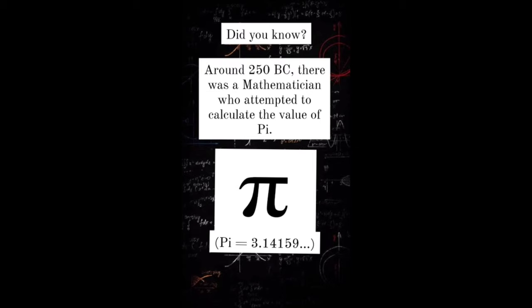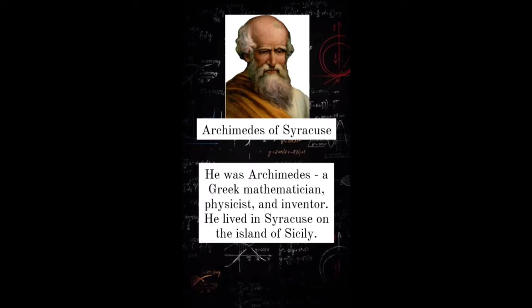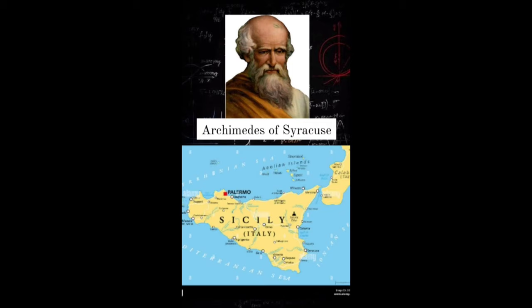Did you know? Around 250 BC, there was a mathematician who attempted to calculate the value of Pi. He was Archimedes, a Greek mathematician, physicist, and inventor. He lived in Syracuse on the island of Sicily.